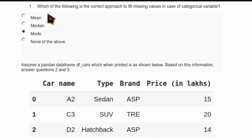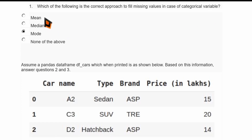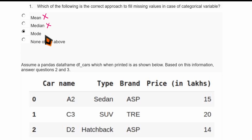The first question: which of the following is the correct approach to fill missing values in case of a categorical variable? Mean is the average of numerical values, so it may not be used for categorical values — not correct. Similarly, median is also used with numerical values — also not correct. But mode is used with categorical values; it gives how many times a particular categorical value occurs, so this is correct.